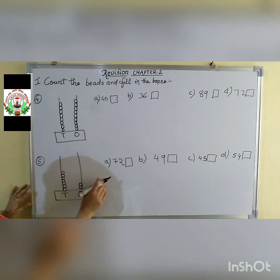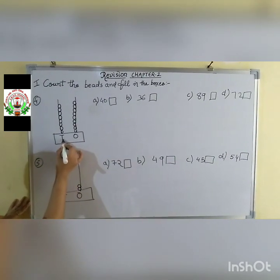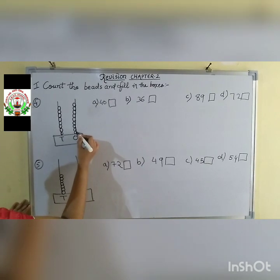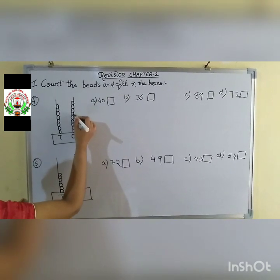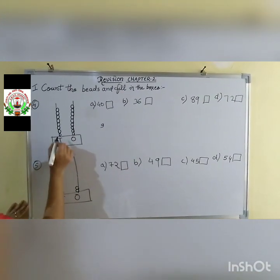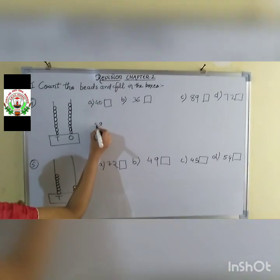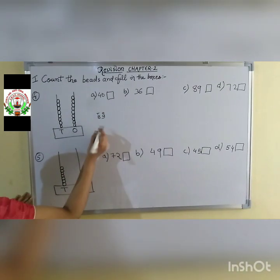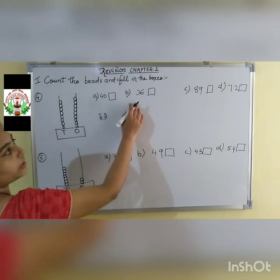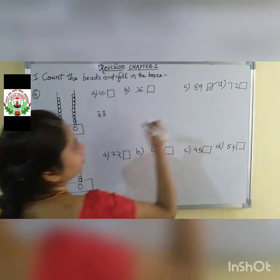Two more questions of the same topic. Start from the 1s place, then go to the 10s place. Count the 1s bits: 1 through 9 — 9 bits. In the 10s place: 1 through 8 — 8 bits. So we get 89. Options: A is 40, B is 36, C is 89, D is 72. Yes — 89 is option C. That is the correct answer. Put a tick mark on C.